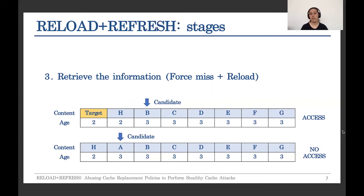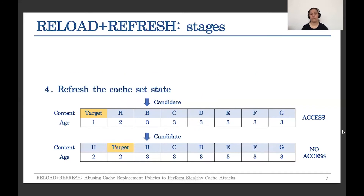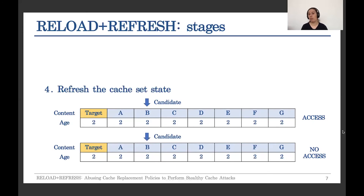Finally, we have to refresh the cache state — meaning we have to bring it back to how it was. The location of the target has to be the first one and the block we used to create the conflict has to be removed from the cache. So we remove both from the cache, access the target, and access the original block that was evicted in the first state. Then we access the remaining elements to refresh their ages, and the eviction candidate becomes the target again.